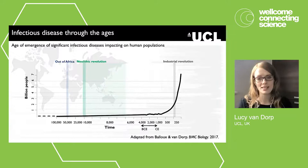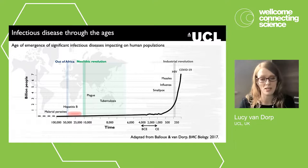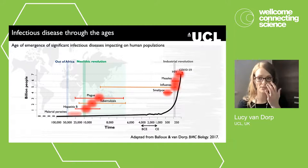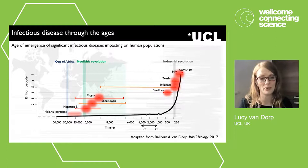COVID-19 is just one of very many zoonotic diseases. Here is a timeline with rough estimates of human population sizes, showing estimated ages of emergence of major infectious diseases. Some have been with us for a very long time — such as tuberculosis, hepatitis B, and plague — whereas others are much more recent emergencies. The timing of these events and the original zoonotic reservoirs remain unclear in most cases, despite many thousands of genomes available from modern samples.